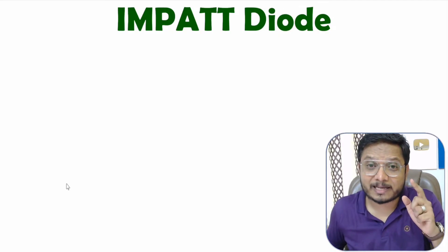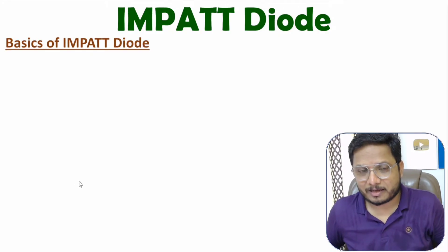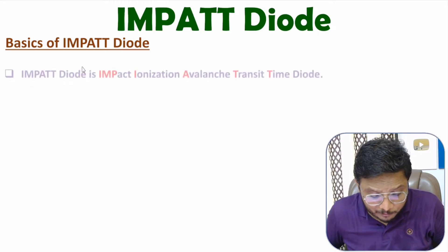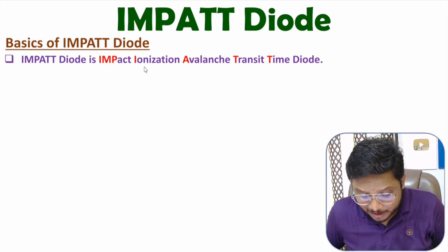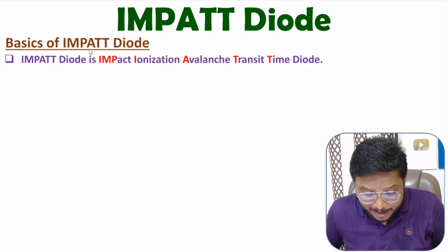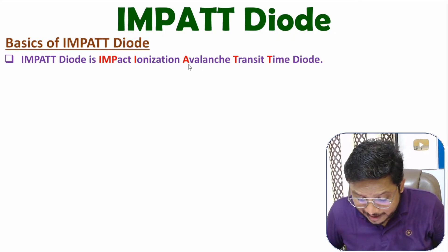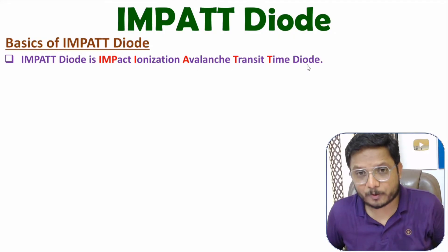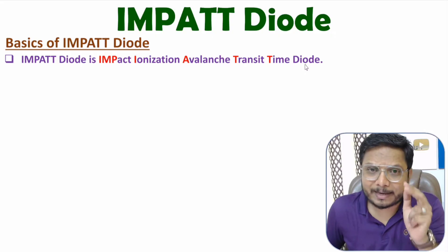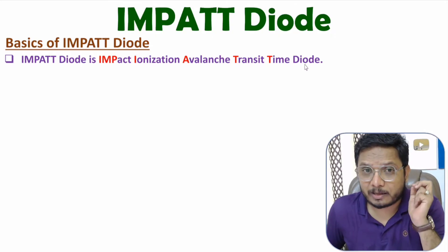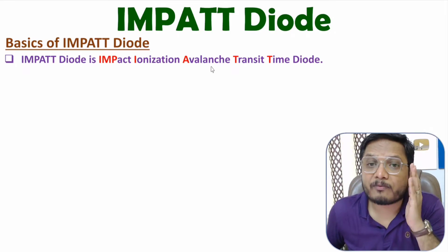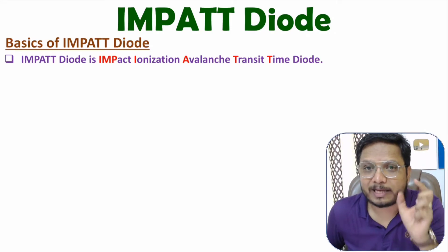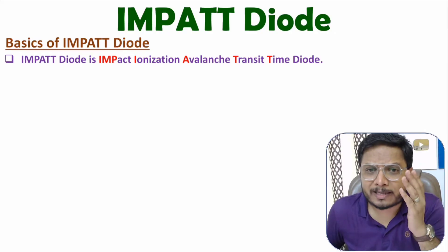Let us begin with the basics of IMPATT diode. First, one should know the full form: IMPATT means Impact Ionization Avalanche Transit Time. So IMPATT diode is an avalanche transit time diode, and it functions based on avalanche effect.